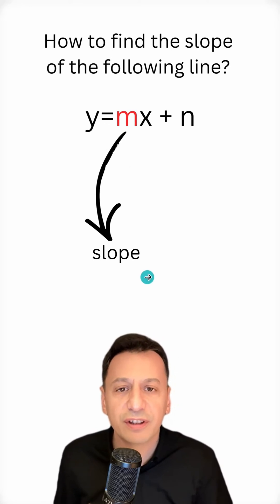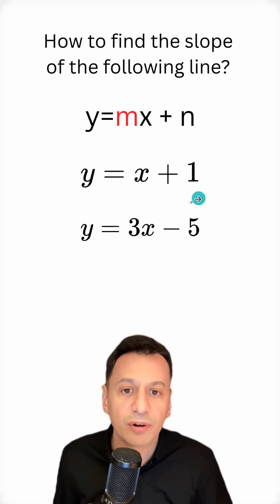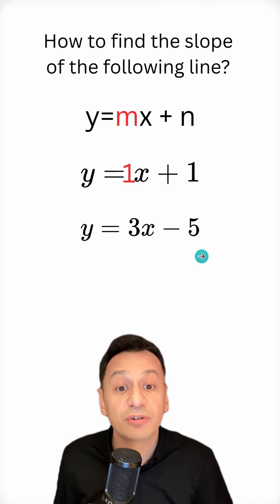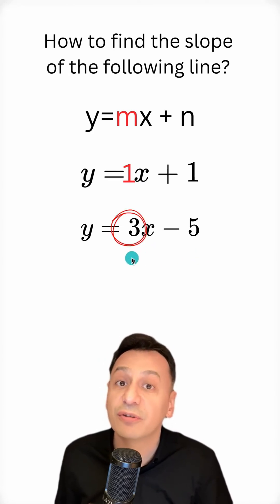Let's look at this with a few examples. For example, y equals x plus 1. Here, since the coefficient of x is 1, the slope of this line will be 1. In y equals 3x minus 5, since the coefficient of x is 3, the slope of the line here will also be 3.